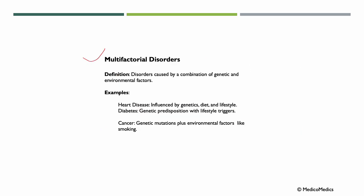Multifactorial disorders are caused by a combination of genetic and environmental factors. Examples include heart disease, influenced by genetics, diet, and lifestyle; diabetes, involving genetic predisposition with lifestyle triggers; and cancer, involving genetic mutations plus environmental factors like smoking.